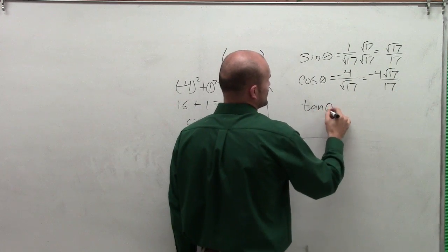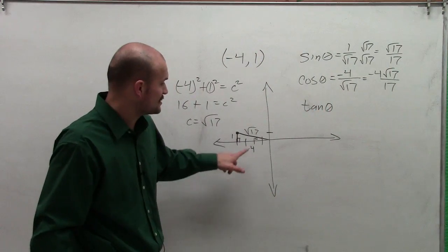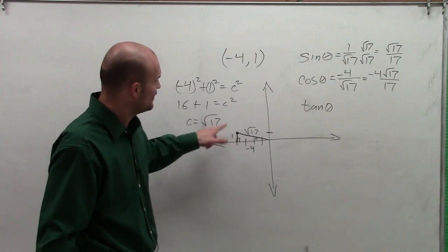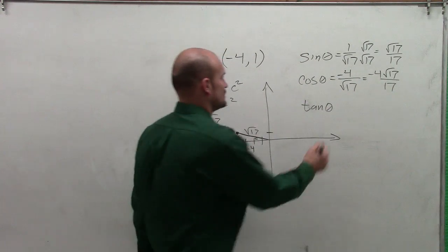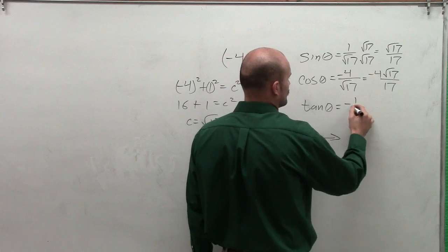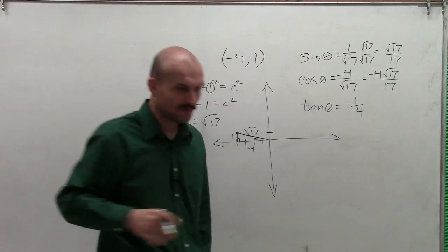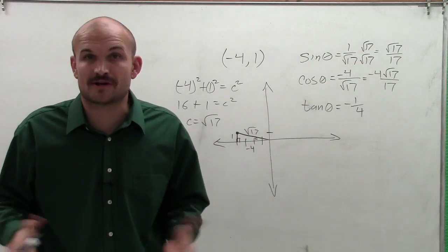Now let's look at the tangent of the angle. Remember, tangent is going to be the opposite over the adjacent. Therefore, I'll have -1/4. So there's your three main trigonometric functions.